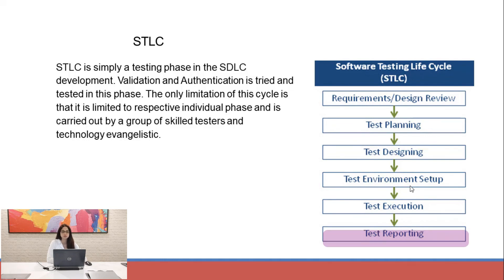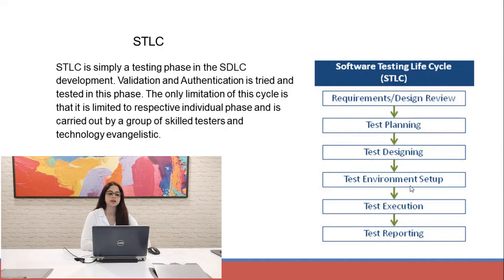Once execution is done, test reporting needs to be done, mentioning the number of test cases that passed, failed, or couldn't be executed due to environment, hardware, or software issues. If automation test cases were run, those results must also be reported — how many passed and how many failed — and submitted to managers, product owners, or stakeholders. Combining all these phases completes the STLC: requirement review, test planning, test designing, environment setup, test execution, and finally test reporting.